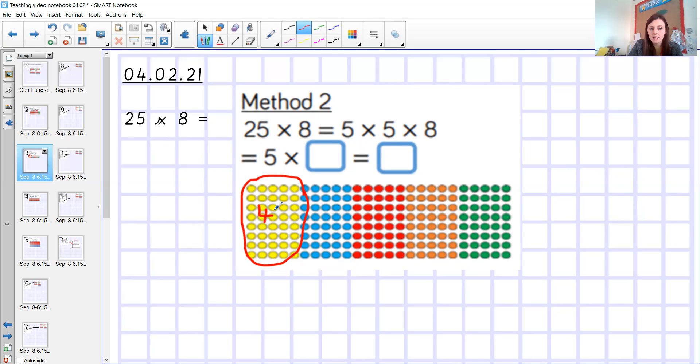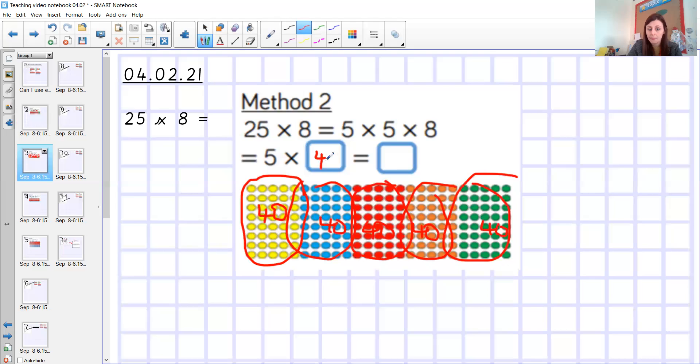So 5 times 8 is 40. So in each one of my arrays, I know that I've got 40. So I've now got 4, 5 times in each part. So 5 times 40 is 200. That's just a different method to use there. So you're splitting it up into intersections that are easier for you to multiply.